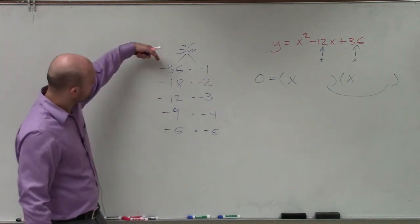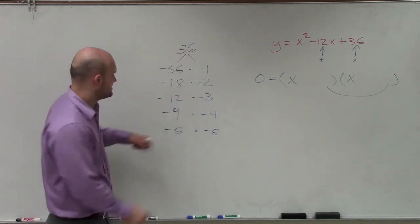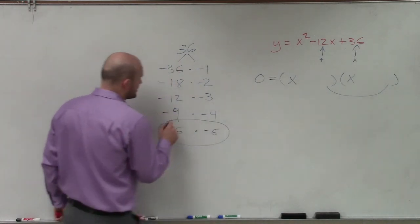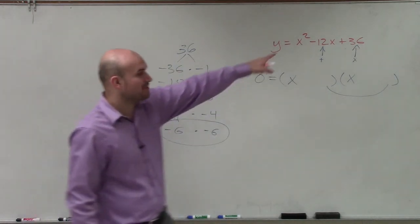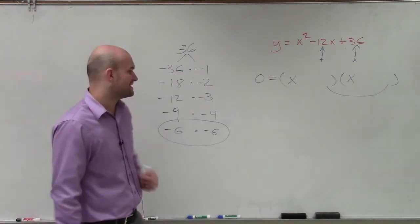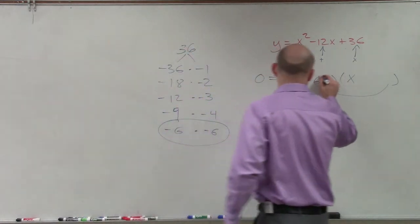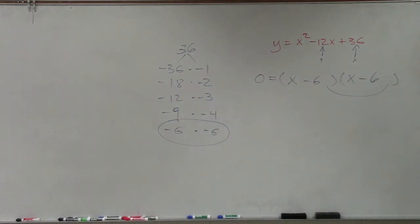I'm going to just visually add each one of these up, and I see that here are going to be my two factors that multiply to give me positive 36 but then add to give me negative 12. I'm just going to take these exact factors out: x minus 6 and x minus 6.